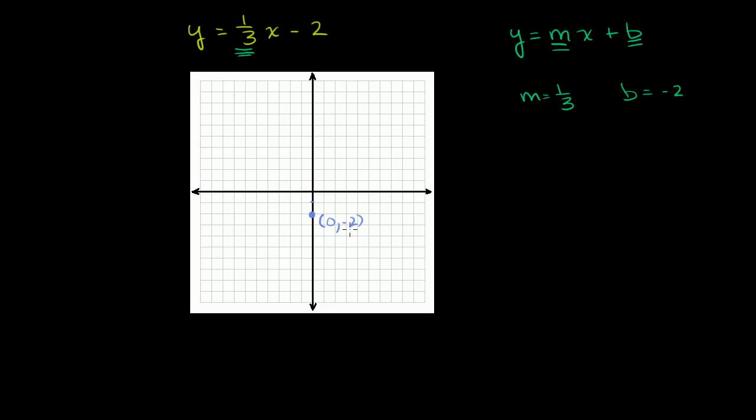If you don't believe me, there's nothing magical about this. Try solving for y when x = 0. When x = 0, this term cancels out, and you're just left with y = -2. So that's the y-intercept right there.